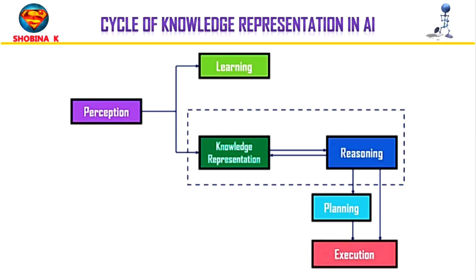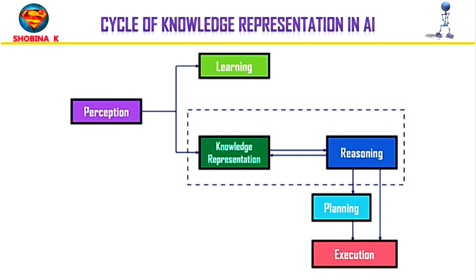The main components in the cycle are knowledge representation and reasoning, which show human-like intelligence in machines. Knowledge representation is all about understanding intelligence — instead of trying to build from the bottom up, its goal is to understand and build intelligent behavior from the top down, focusing on what an agent needs to know in order to behave intelligently. It also defines how automated reasoning procedures can make this knowledge available as needed.